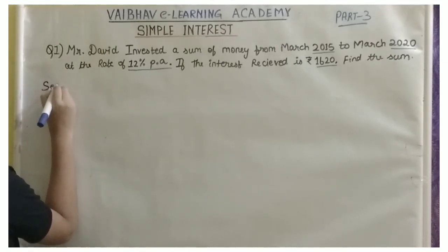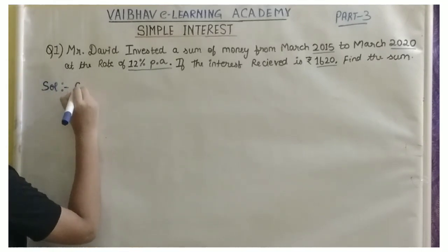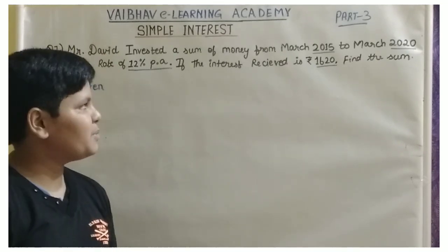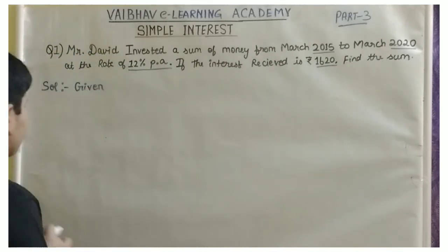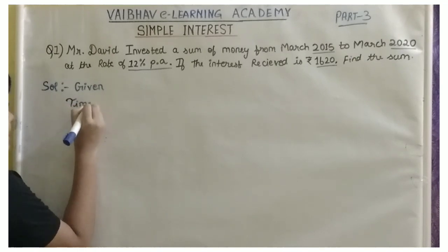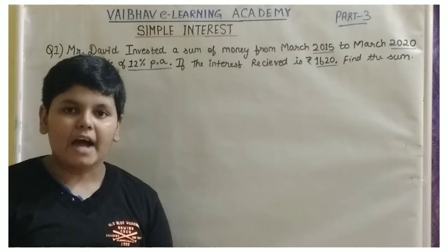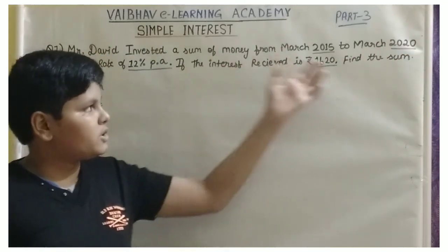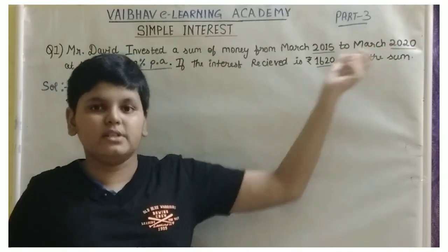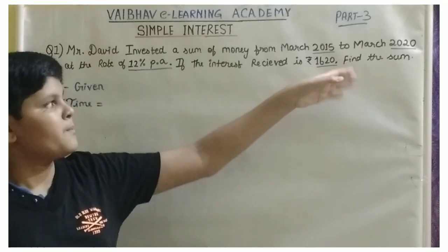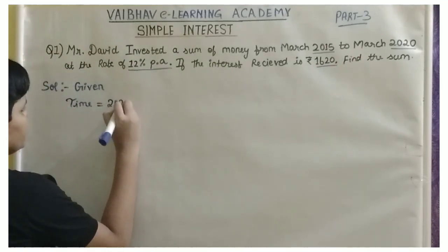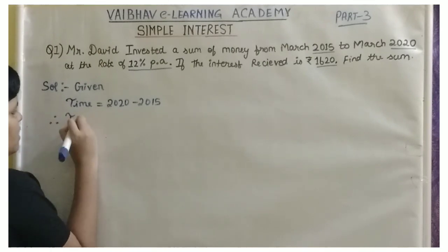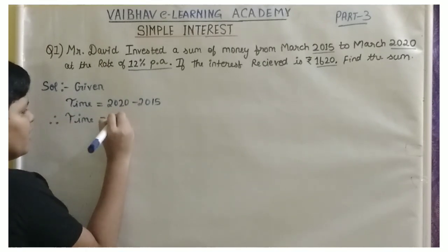Starting with the solution. First of all, let us write what are the given quantities. The time period given to us is March 2015 to March 2020. To find the total time, we will be subtracting the lower value from the higher value: 2020 minus 2015. Thus, time is equal to 5 years.